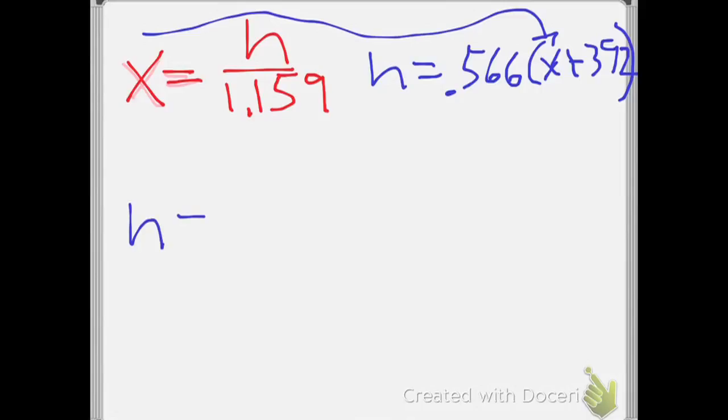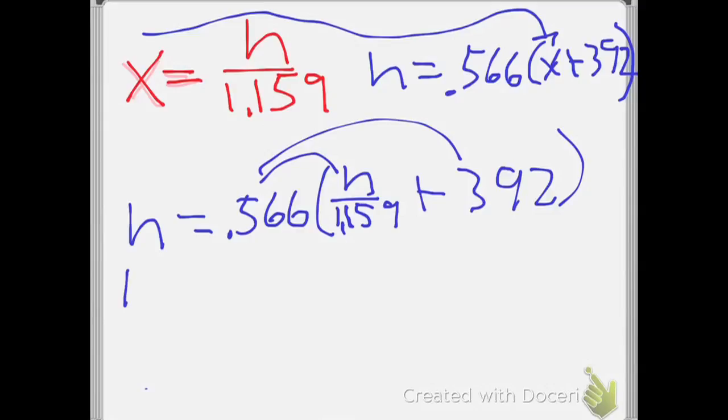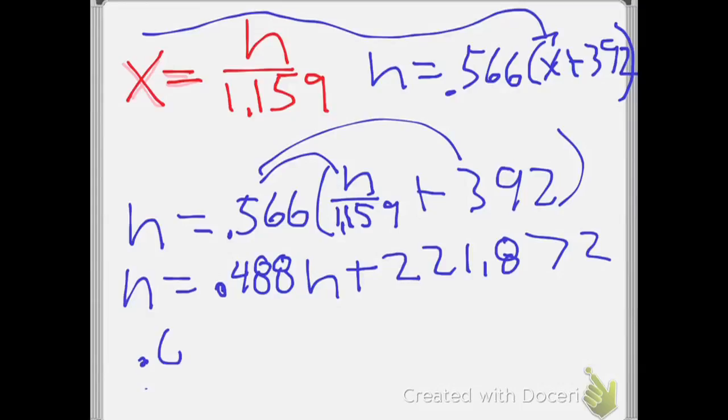I want to take those and transfer them to the next page. So I have x equals h over 1.159 and h equals 0.566 times x plus 392. What am I going to do now? Substitute. I'll put this guy right in there. This is going to be h equals 0.566 times h over 1.159 plus 392.